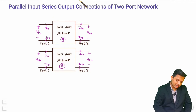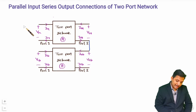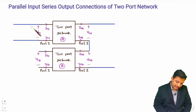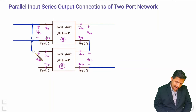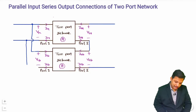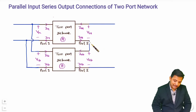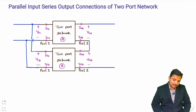Now I'll be providing Parallel Input Connection and Series Output Connection. For the Series output connection, you just need to connect the ports in series. For the Parallel Input Connection, let me extend the lines and connect the terminals of Network A to the corresponding terminals of Network B, giving us Parallel Connection at the Input Side and Series Connection at the Output Side.